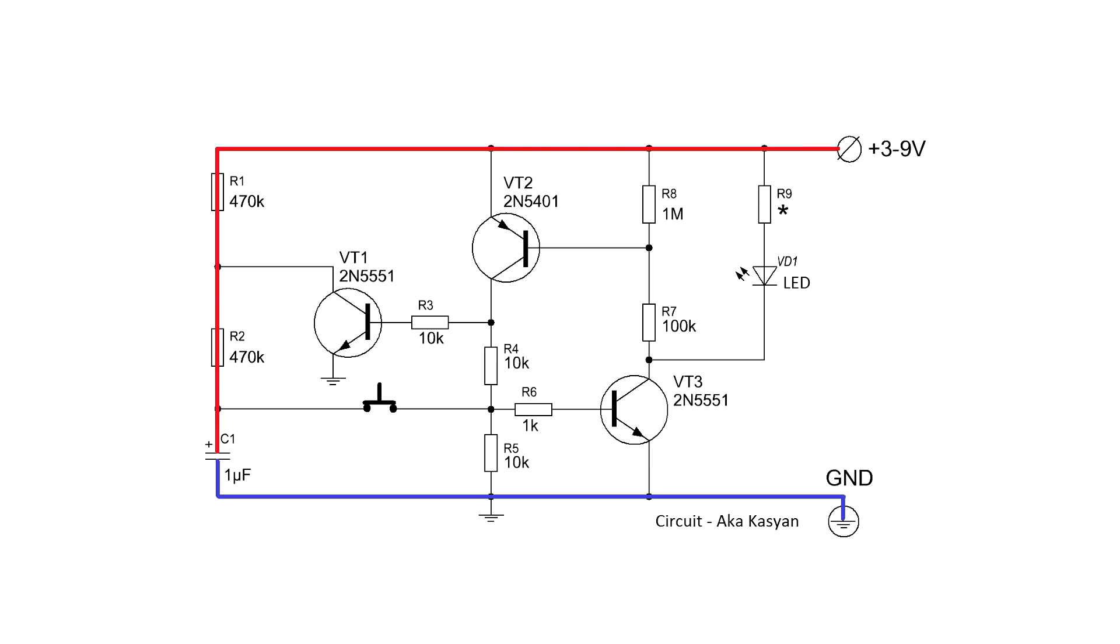When the button is pressed, the positive signal from the capacitor goes to the base of the transistor VT3 and opens it. Through this transistor, the voltage goes to the base of the transistor VT2, so it also works. The load, in our case the LED, is also activated during the operation of the transistor VT3.